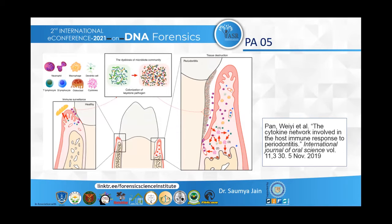When the immune pathogenicity of the local microbiota is elevated by colonization of keystone pathogens, as we can see, there is dysbiosis of the microbial community which overactivates the host immune response. This further leads to cytokine secretion, which mainly participates in the amplification of pro-inflammatory cytokine cascade and lymphocyte production.